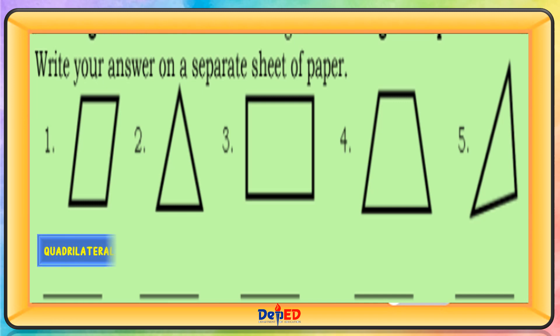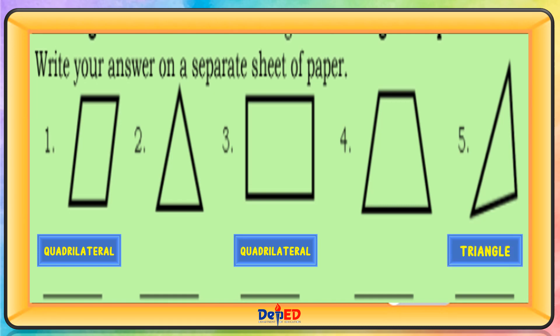The first picture is a quadrilateral. The third picture is a quadrilateral. The fifth picture is a triangle. The second picture is a triangle. The fourth picture is a quadrilateral.